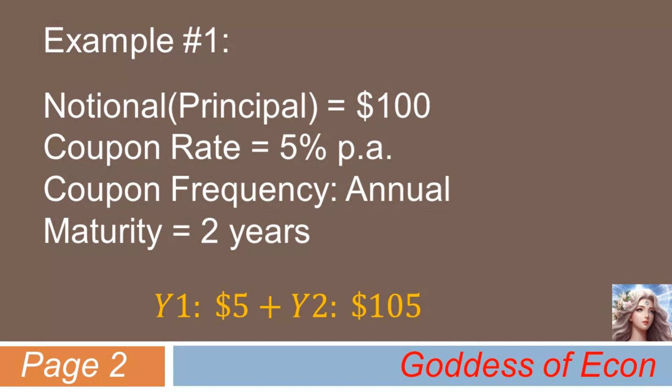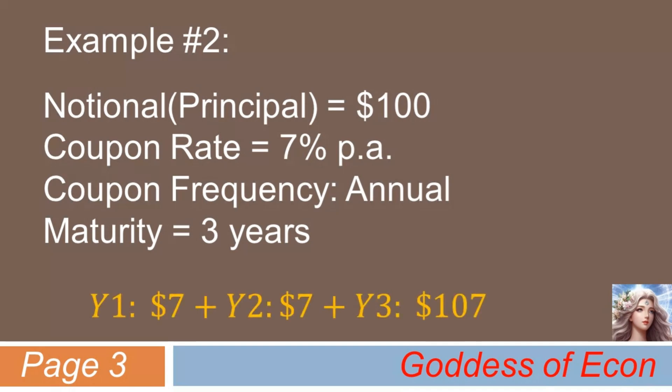Now, let's look at another example. Here is a bond with notional principal amount of $100, 7% coupon this time, with yearly payments, and maturity of 3 years. In this case, what would the cash flows from the bond look like? Well, in year 1 it pays $7, the coupon amount. In year 2 again, it pays $7. Then in year 3, it pays $7, along with $100, which is the principal amount. Again, very simple to understand, isn't it?